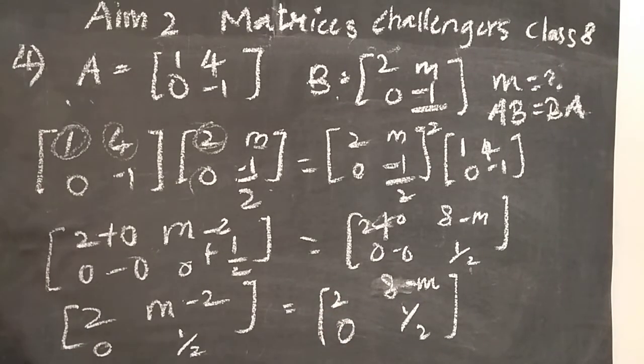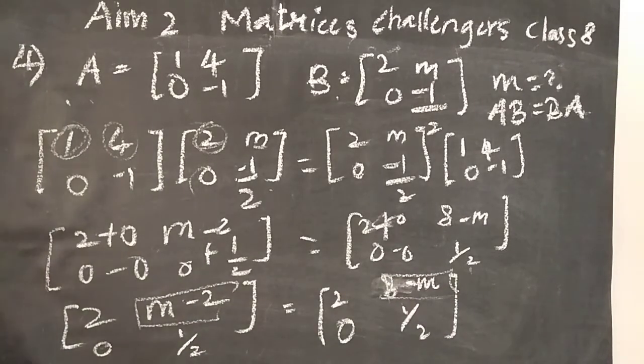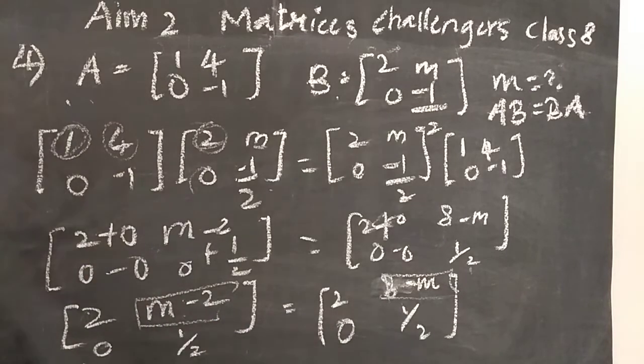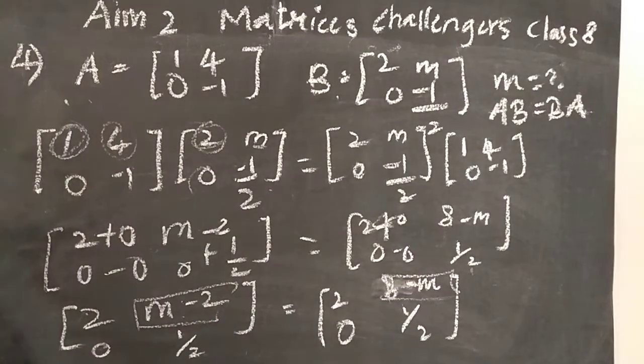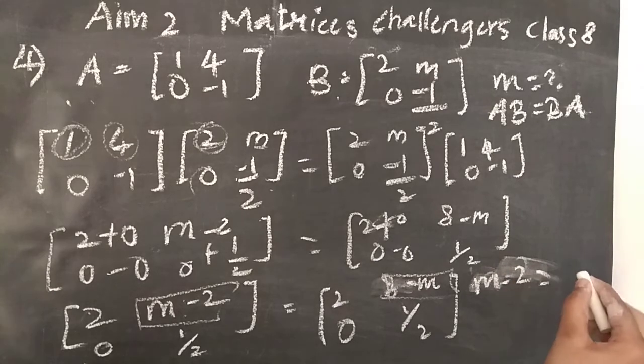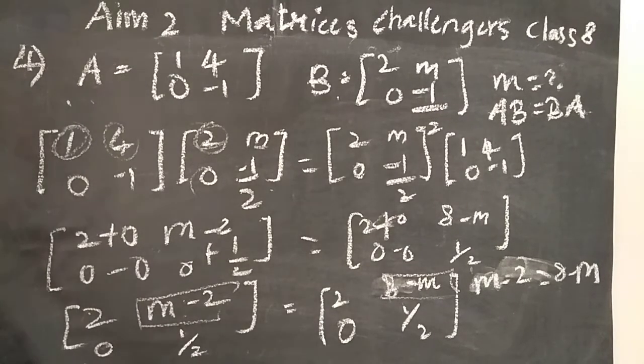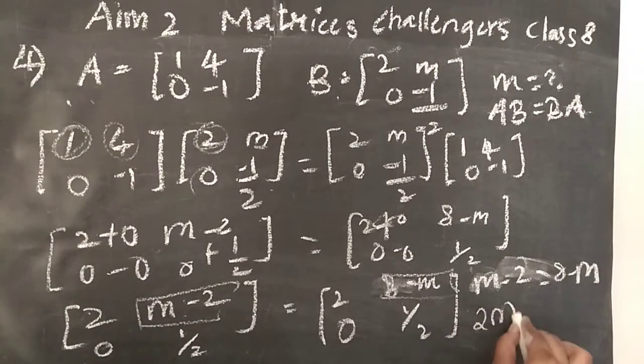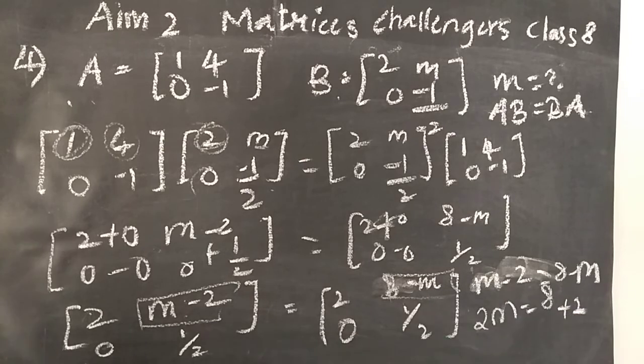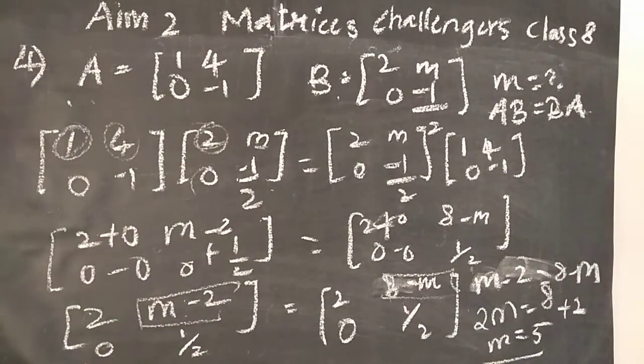Now here M value. So M minus 2 equal to 8 minus M. Equal matrices. See all are equal except this, so this one we will solve. M minus 2 equal to 8 minus M. And M if you send to one side, like this minus M if you send to LHS, it becomes M plus M. So 2M equal to 8 plus 2. So M is equal to, this will be 10, 10 by 2 is 5. Now we will see next question.